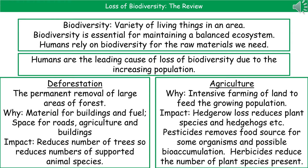Second one: agriculture. We're carrying out a lot of intensive farming of land in order to feed this ever-growing population. But the downside is that we're losing hedgerows, so we've reduced the number of plant species and the organisms that lived in them. We're also using pesticides, which is going to remove food source for some organisms, and we also get the problem of bioaccumulation of pesticides. Plus we could have herbicide use, which reduces the number of plant species present, which again has the knock-on effect of what other organisms can live there.